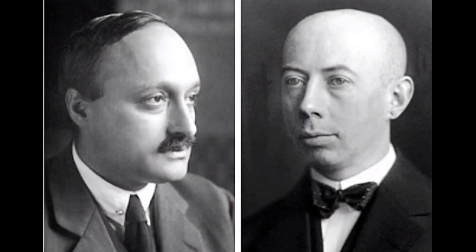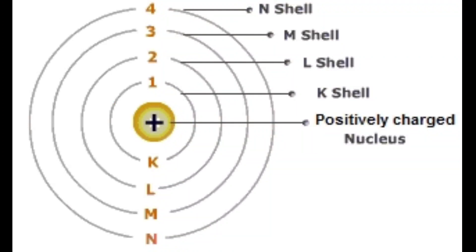German-born physicists James Frank and Gustav Hertz obtained the experimental evidence of the presence of these states. Now I will discuss the distribution of electrons in orbits or shells.